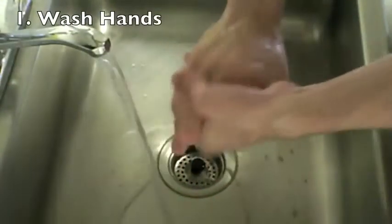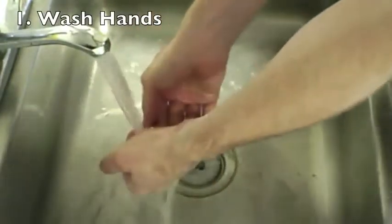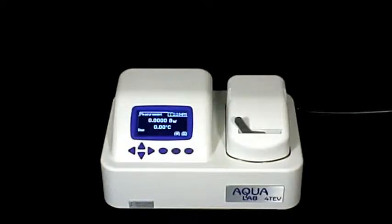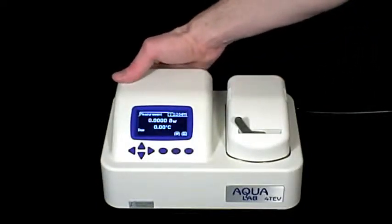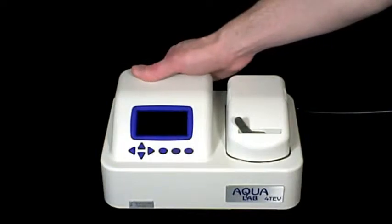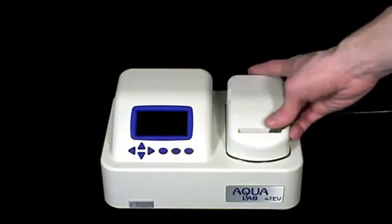Let's get started by washing our hands first. This ensures that oils that naturally occur on the hands do not interfere with the cleaning process. Once you've washed your hands, turn off the power to your Aqualab, and then open the lid to the sensor chamber.